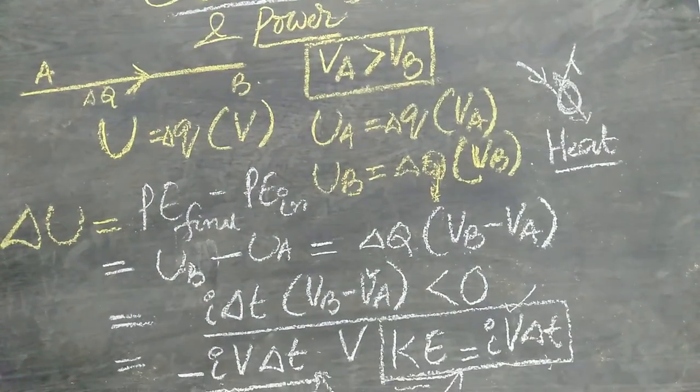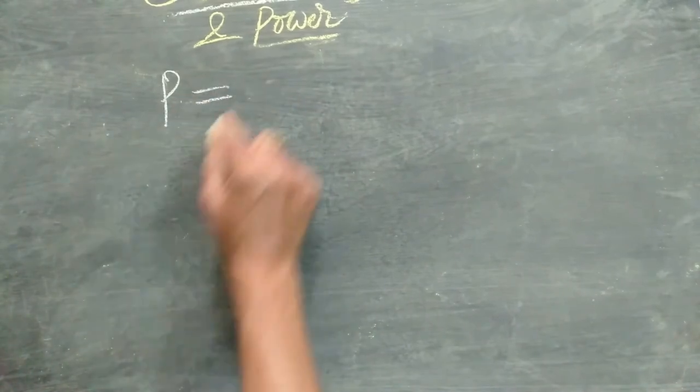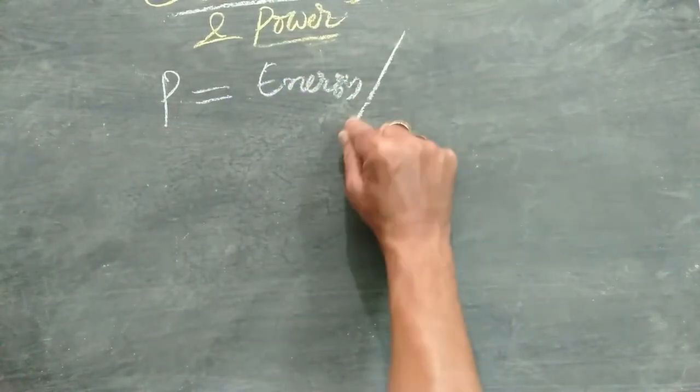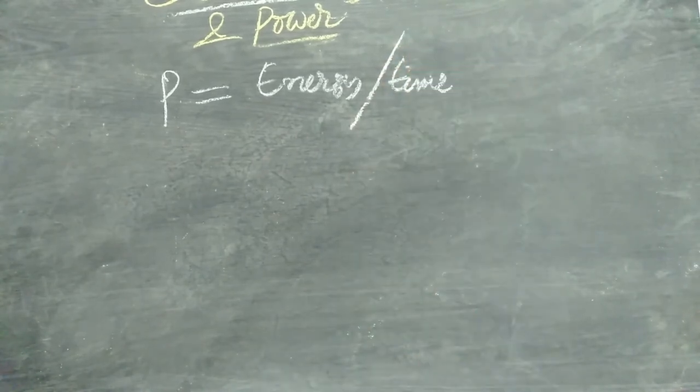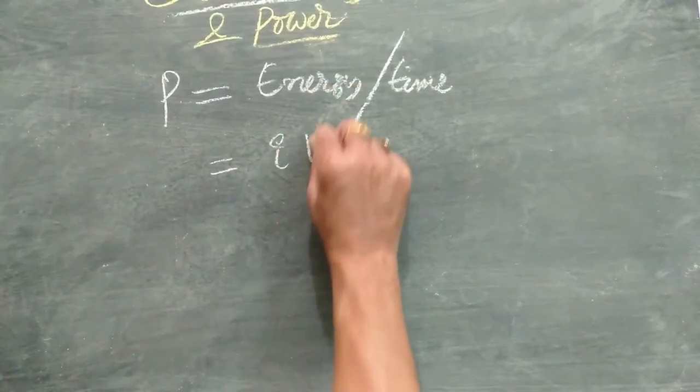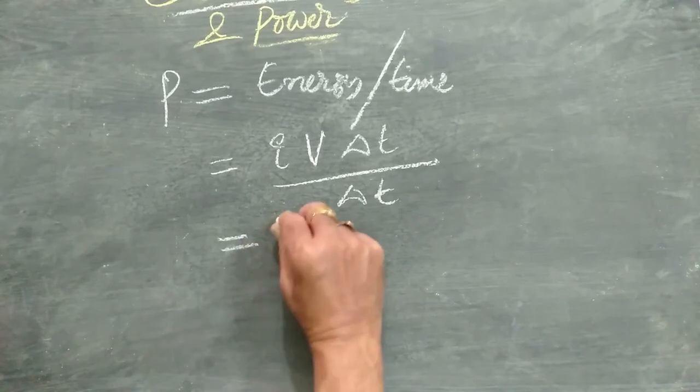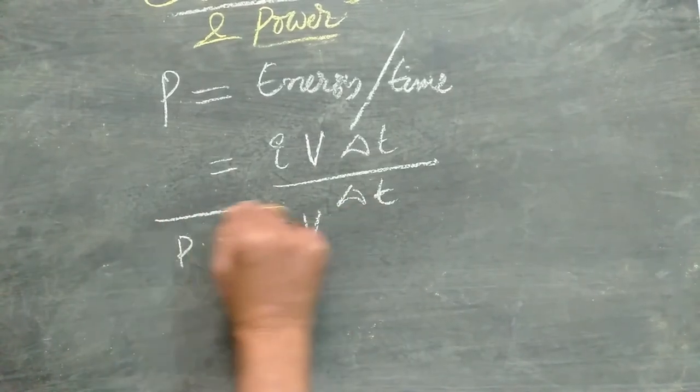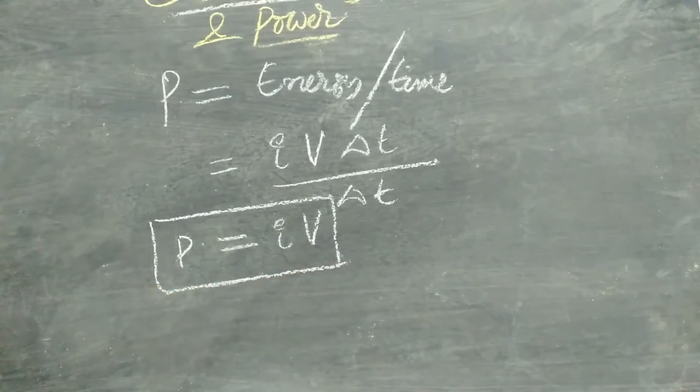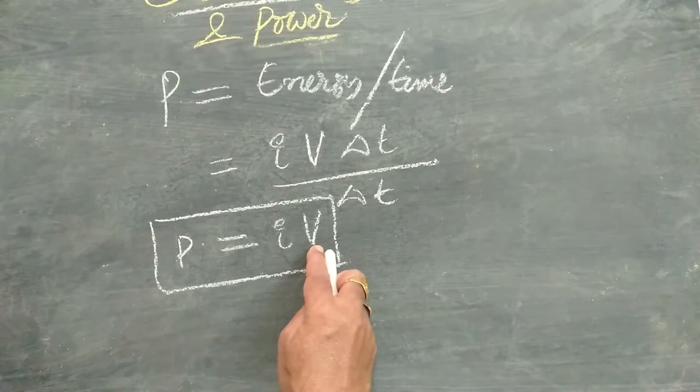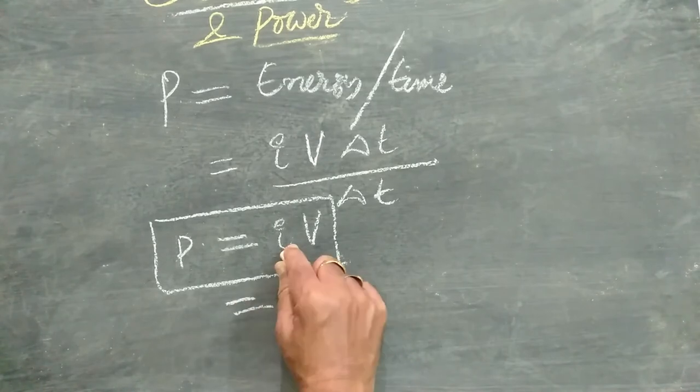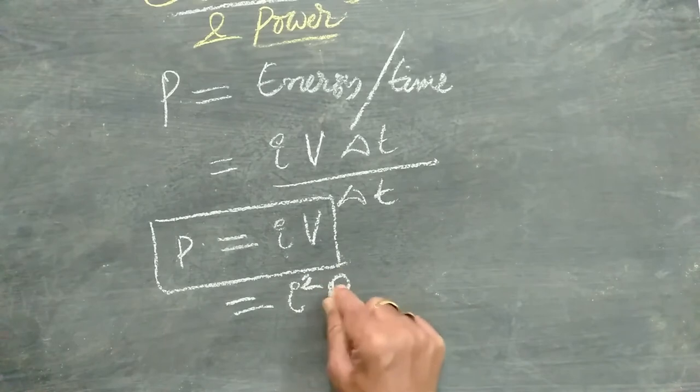Now, what is power? To calculate power, we know that power is equal to energy by time, the rate of doing work, the rate of energy supplied is only known as power. So energy we got IV delta T, and time delta T. Therefore, the power is the product of current times potential difference. Now, I can replace this V according to Ohm's law as IR. So I can write I times IR. So that is I square R.